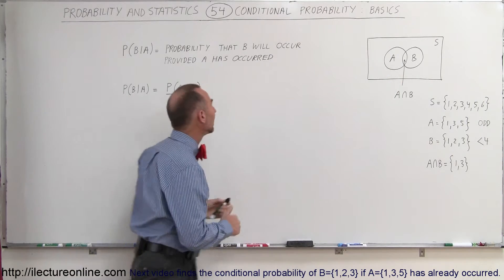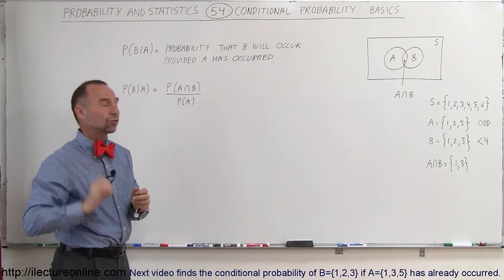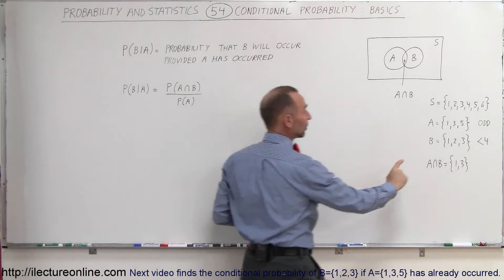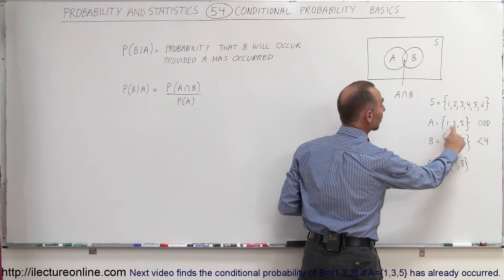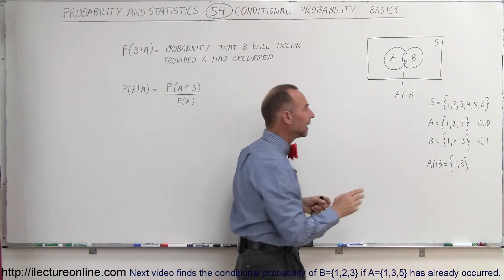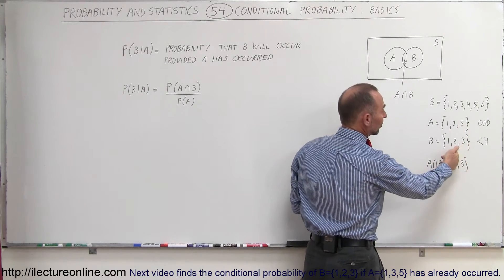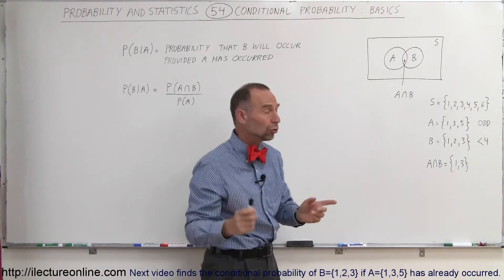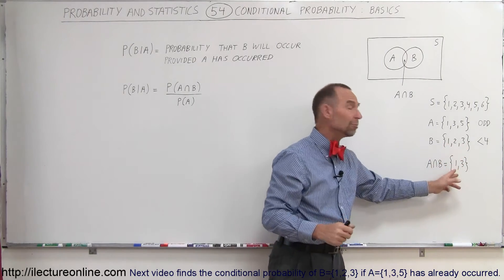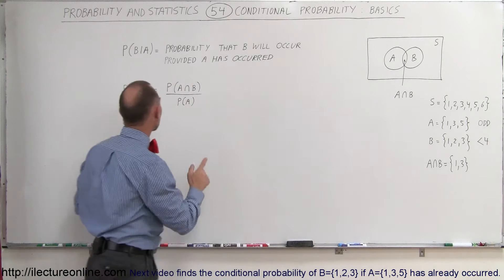Now we can ask what is the probability that B will occur knowing that A has occurred? If A has occurred, that means it either was a 1, a 3, or a 5. And if that is true, what will be the probability that the number will be B, in other words 1, 2, or 3? Well, you can clearly see that it's not possible that it's 2, but it can be 1 and 3, which is where A and B intersect.